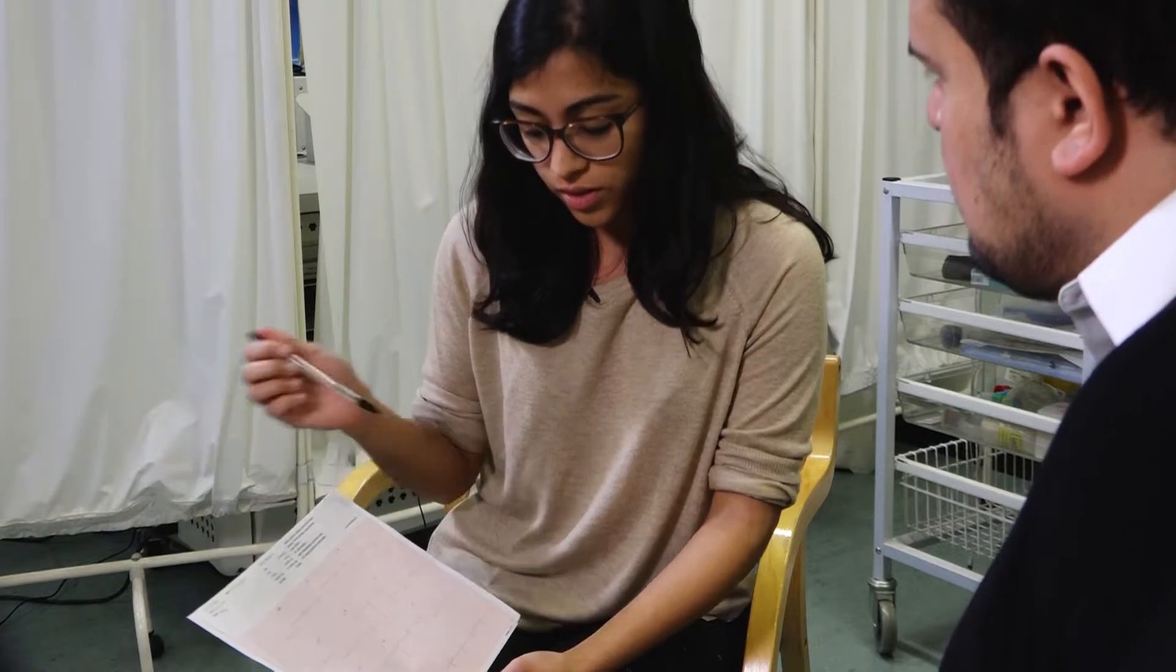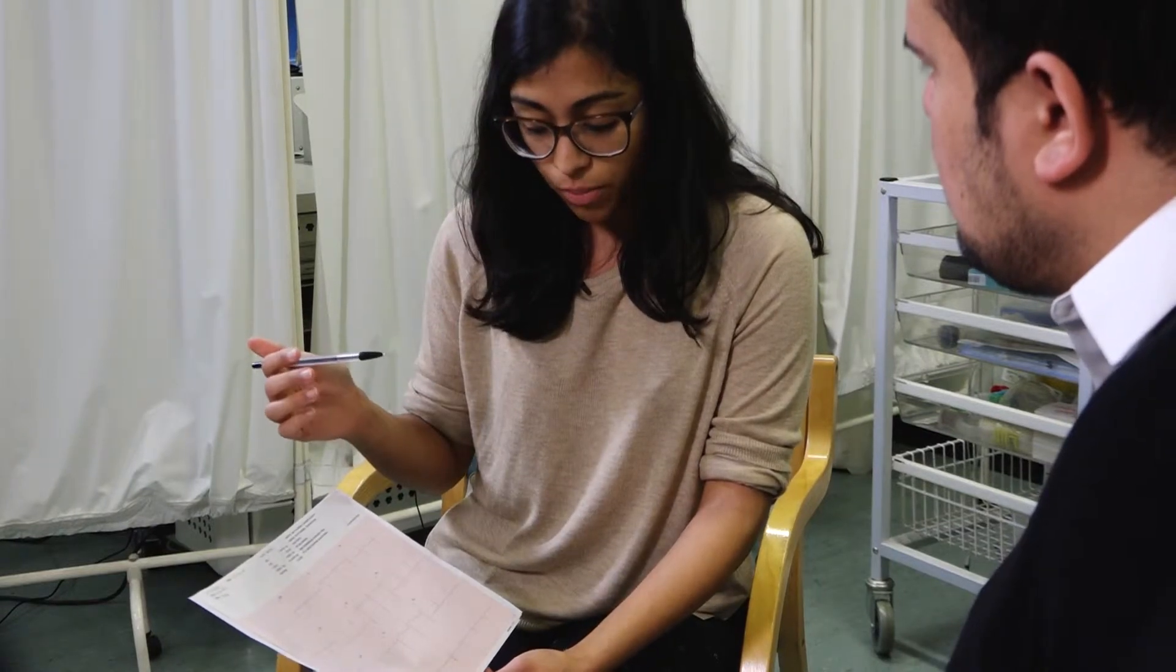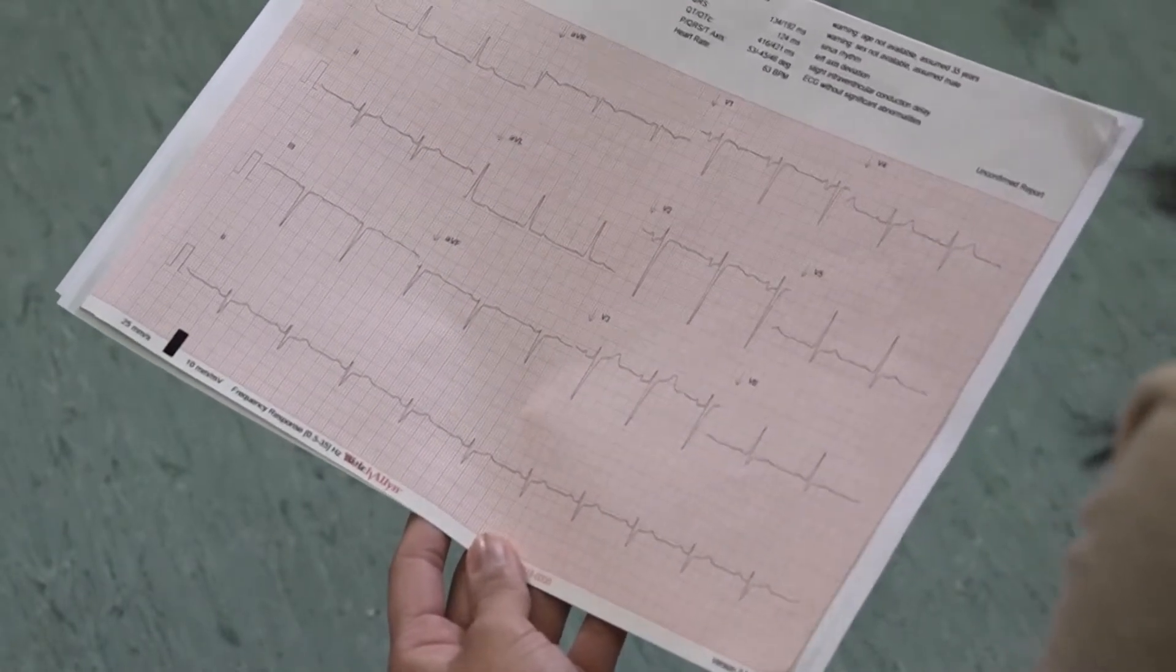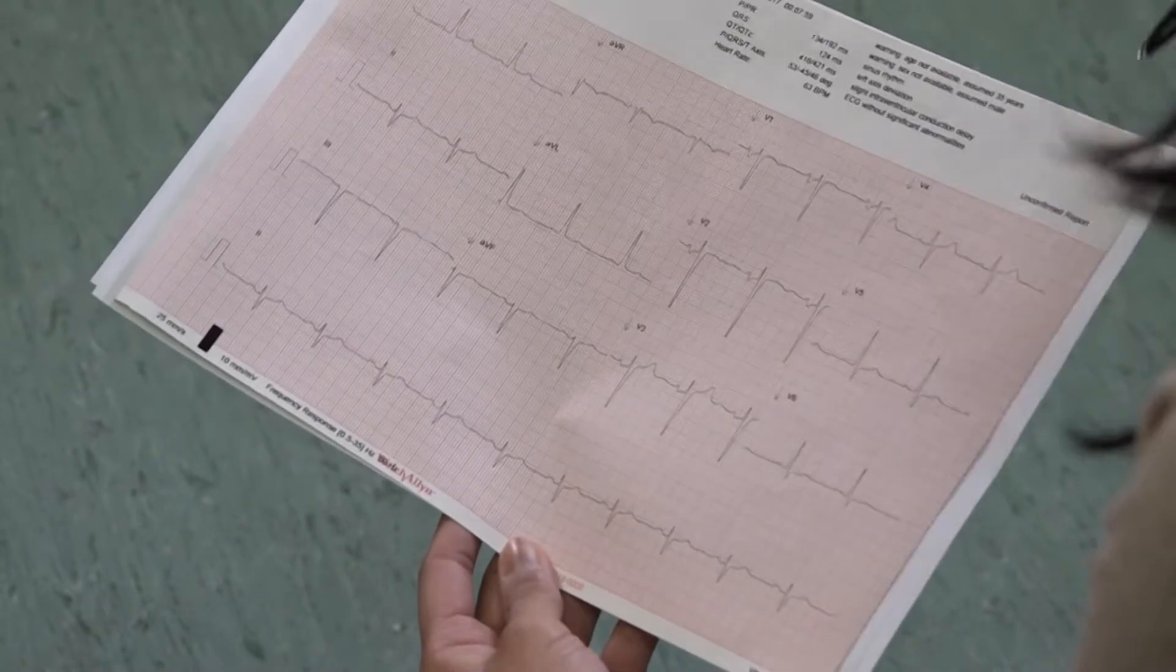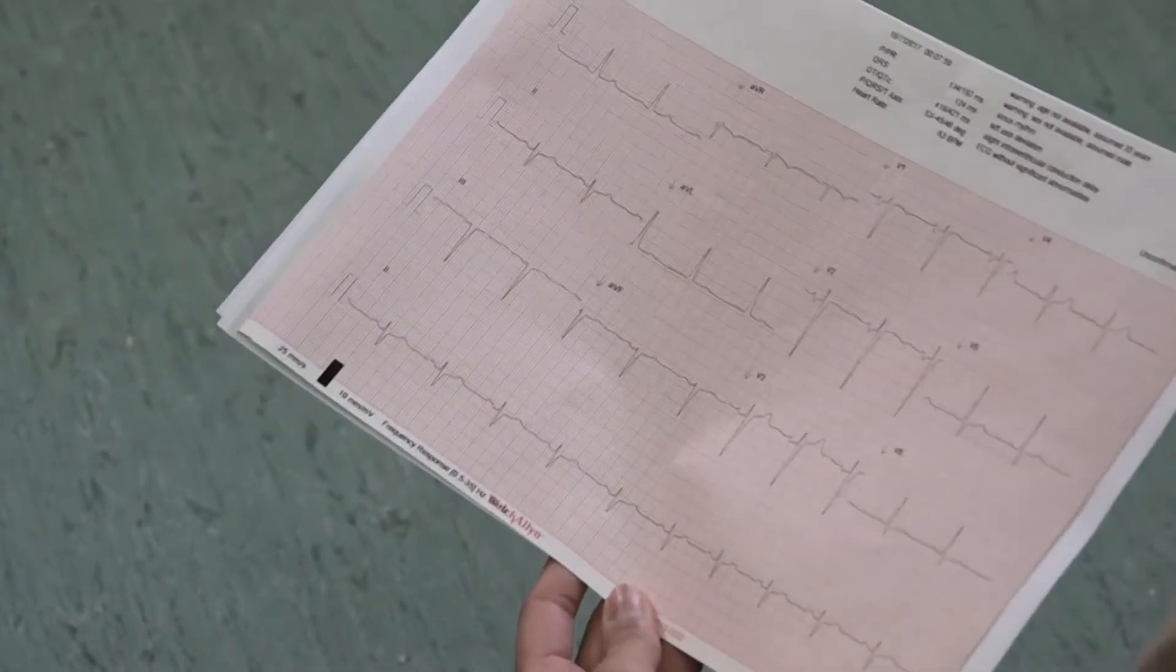The next component we'd normally look at is the QRS complex. The most important aspect of the QRS complex is whether it's narrow or broad. Narrow is anything less than three small squares and broad is anything more than three small squares. You have different abnormalities associated with broad complex QRSs.